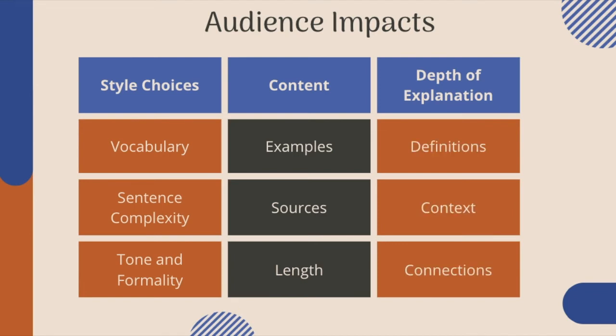That brings us to depth of explanation, which is really the point of this video. Depending on who your imagined audience is, you'll want to make sure that you've given appropriate definitions of potentially unfamiliar terms. For example, if you're writing about weather and you use the word erosion, a peer might be expected to know that word, but a younger kid might need it defined. You'll also want to look at the provided context — that is, background information. If you're writing about a book and you can assume your audience has already read it, you won't have to give as much summary, but if you're writing for someone who has never read it, you'll need to give more.